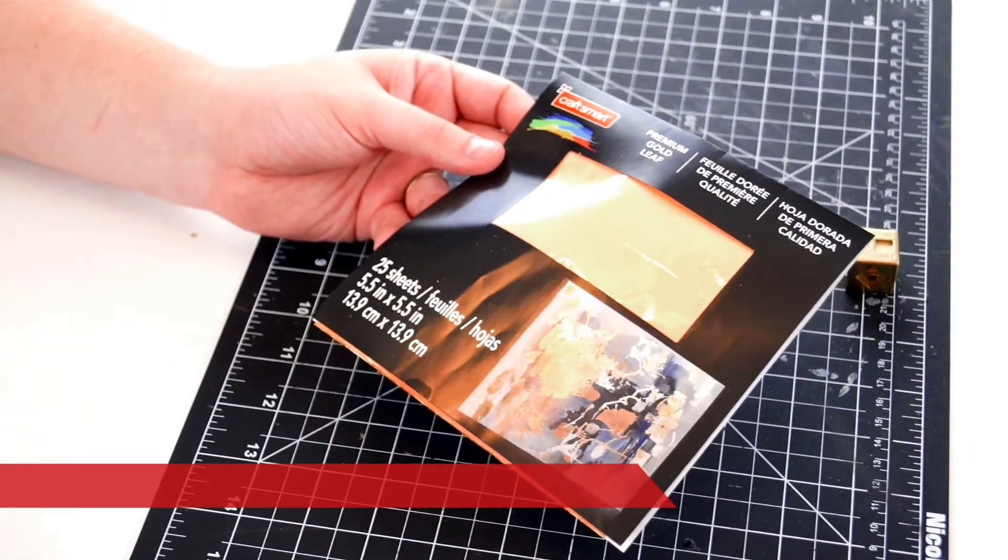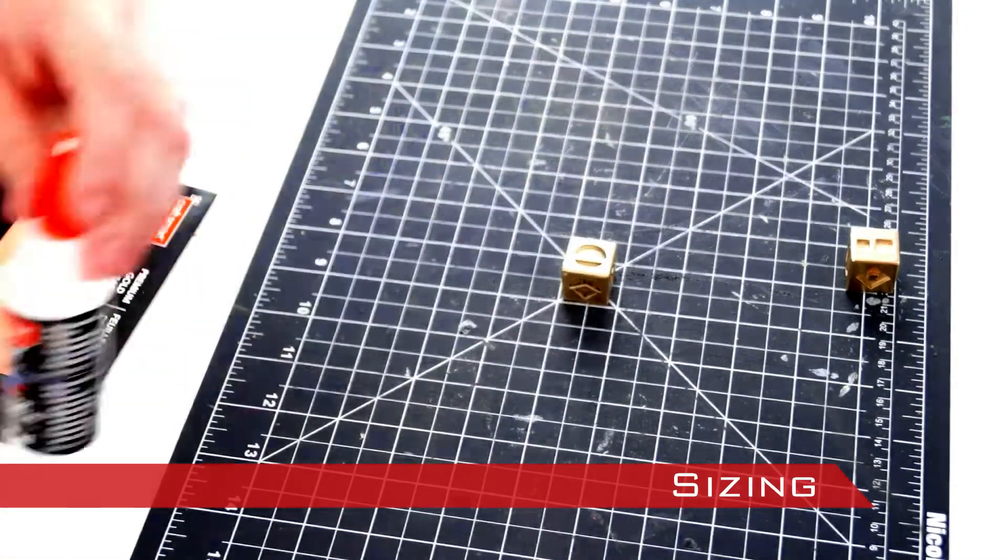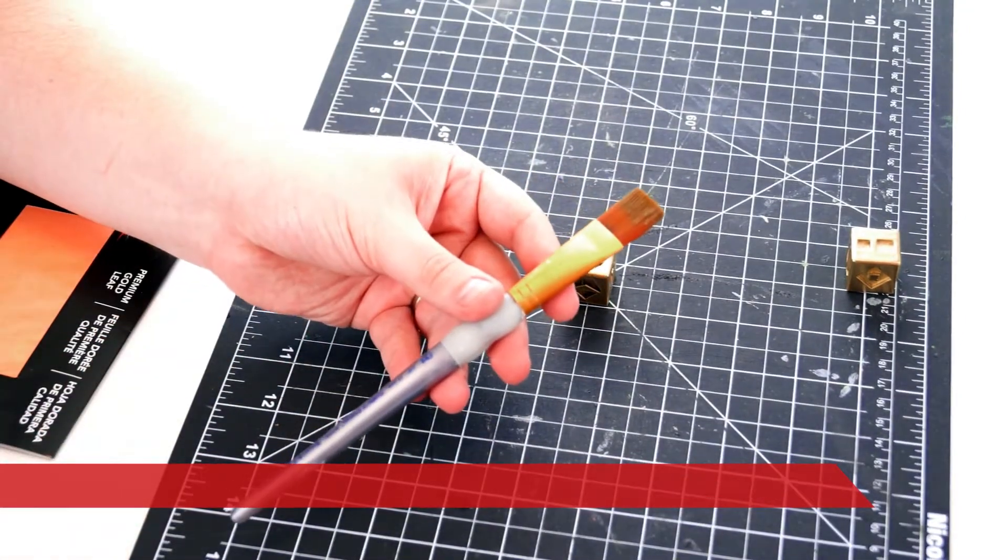To apply the gold I used gold leaf sheets, metal leaf adhesive also known as sizing, and three various brushes.